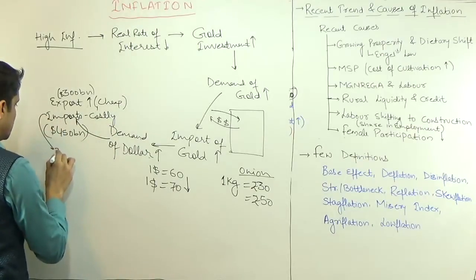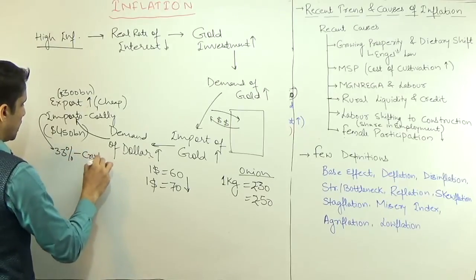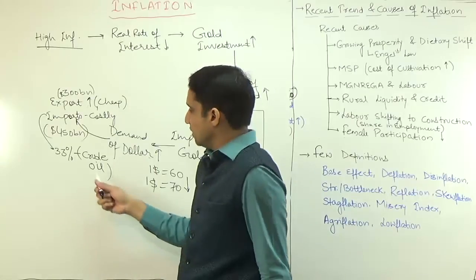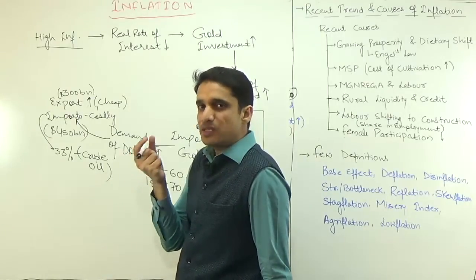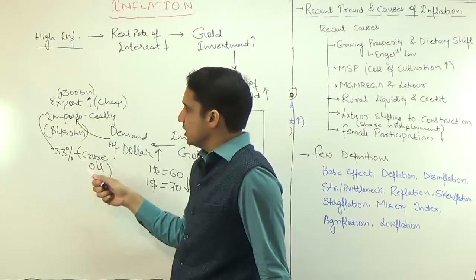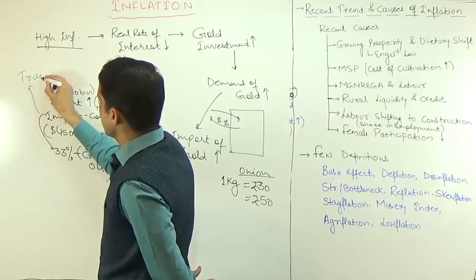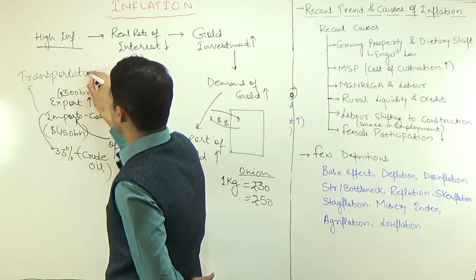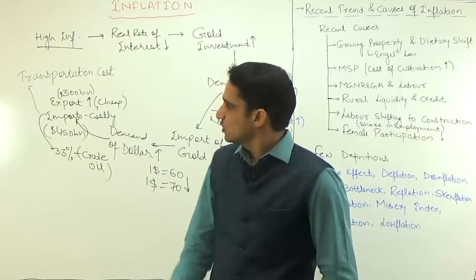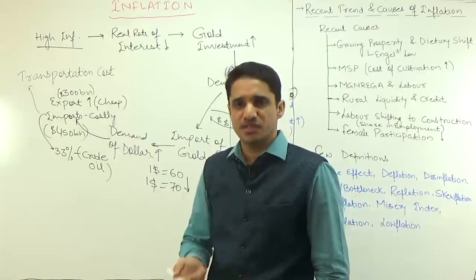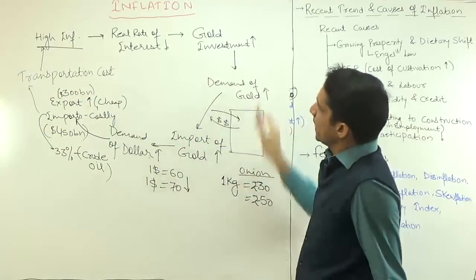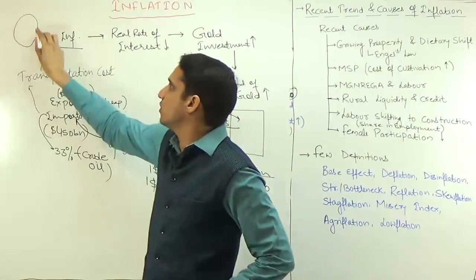More than thirty-three percent of India's import basket is just one item: crude oil. When imports become costly, crude oil becomes costly, which means the prices of diesel and petrol in India increase. When diesel and petrol prices increase, transportation costs rise. Since transportation is the backbone of selling any goods or services, higher transportation costs increase the prices of all goods and services across India, ultimately increasing inflation further — creating a vicious cycle where high inflation causes more inflation.